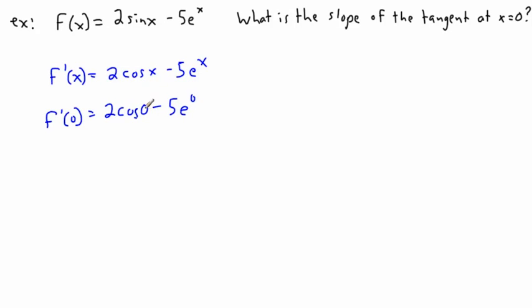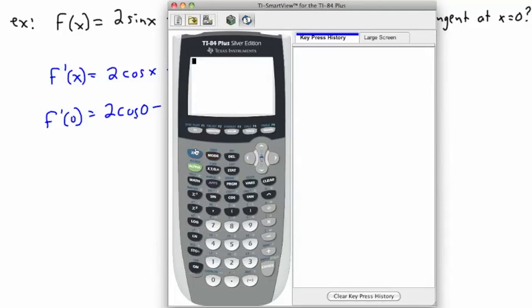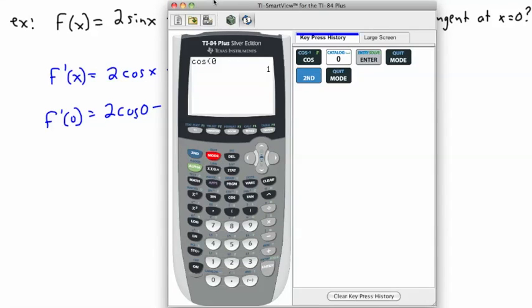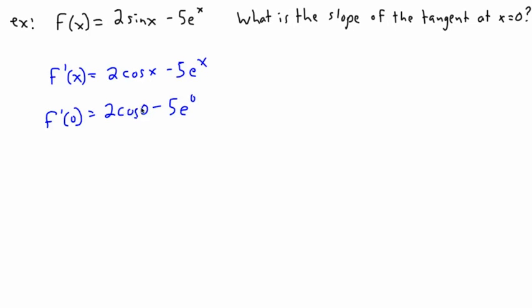Now it turns out cos of 0 is just 1. If you don't believe me, I suppose we can take a look at it here. So cos of 0 is just 1. It doesn't matter if you're in radian or degree mode. Although for this graph, I need to make sure I press mode here and make sure I'm in radian mode, which I am. So 2 times cos of 0, well cos of 0 is just 1, so 1 times 2 is just 2. So that means this is just going to be 2. And e to the 0, well anything to the 0 is just a 1. So 1 times negative 5 is just negative 5. Therefore my slope of my tangent at x equals 0 is just going to be 2 minus 5, which is negative 3. So that should be my answer.